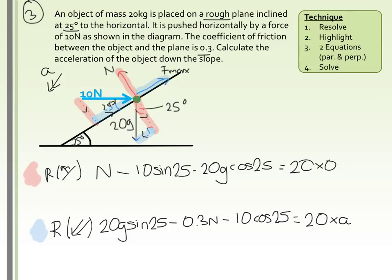From the perpendicular equation, since the right-hand side equals 0, we rearrange to get n = 10 sin 25 + 20 × 9.8 × cos 25, giving us 182 newtons for the normal force. Substituting into the parallel equation: 20 × 9.8 × sin 25 minus 0.3 × 182 minus 10 cos 25, all divided by 20, gives a rather small acceleration of 0.959 metres per second squared.